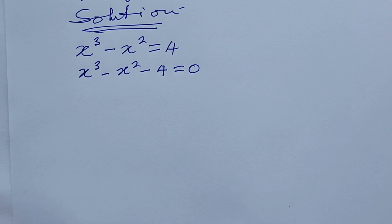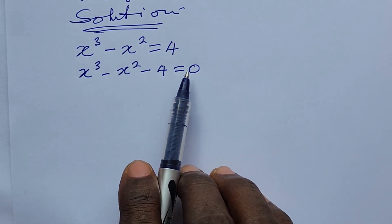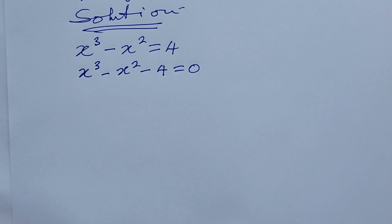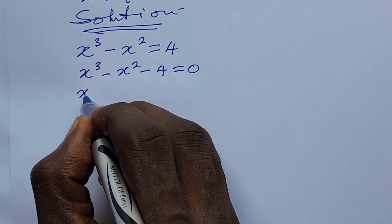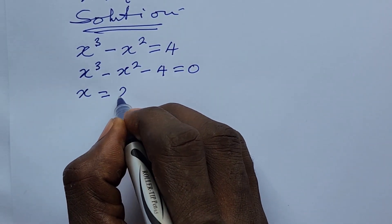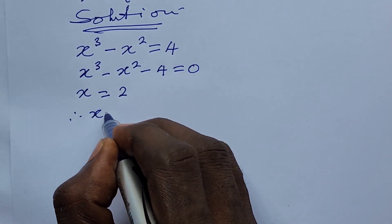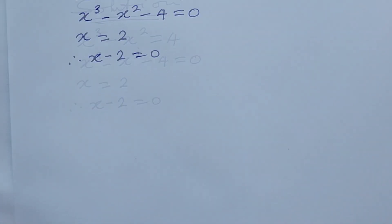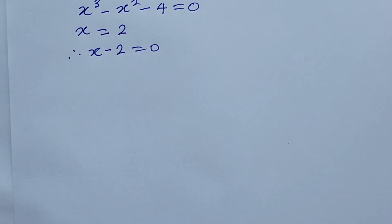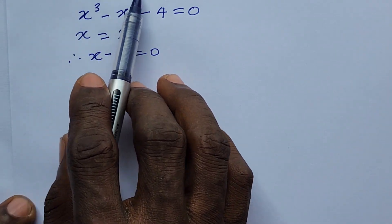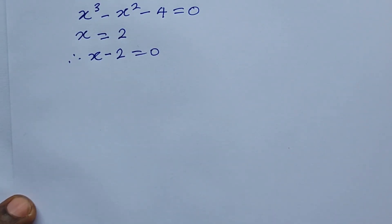Here we get the first root to this expression using the trial-and-error method — this is allowed in mathematics. The number we put in place of x that will make everything on the left-hand side equal to the right-hand side is 2, so x is equal to 2, which gives us x minus 2 equals 0. To find the second factor or second root, we use this factor to divide the expression using the long division method.